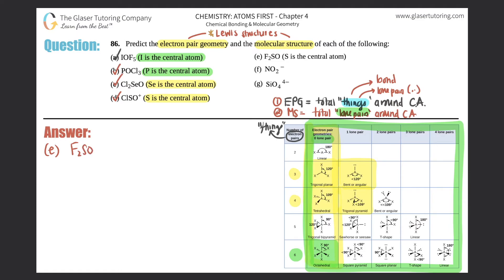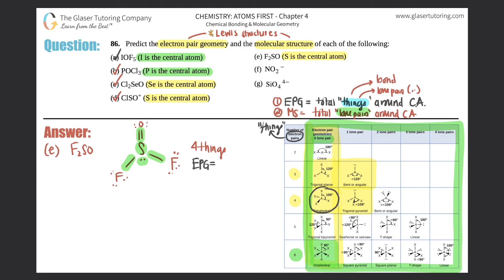Part e: F2SO. Sulfur is the central atom surrounded by two fluorines — each fluorine has three lone pairs to satisfy the octet. There is a double bond to oxygen, and sulfur has one lone pair (no charge). Counting things on sulfur: one bond, another bond, the lone pair, and the double bond (counts once) — four things total. Electron pair geometry is tetrahedral.